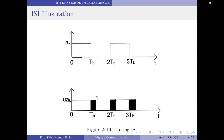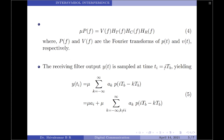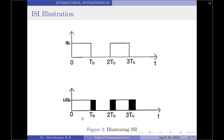Let us now understand the effect of inter-symbol interference using the diagram. For the very first pulse, which represents symbol 1, at the receiver output we sample at exactly 1 T_B. Since I = 1 for the first symbol, we extract the pulse from 0 to 1 T_B. Since this is the very first pulse transmitted and there are no previous pulses, the residual effect on decoding this first pulse is zero — so this pulse is not affected by inter-symbol interference.